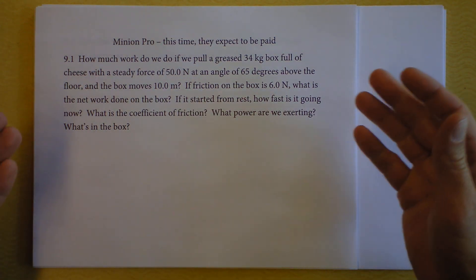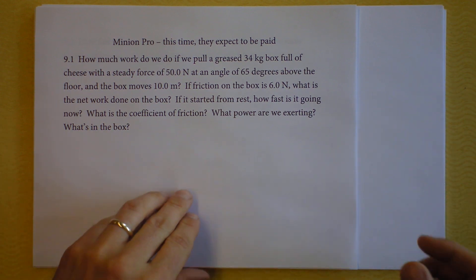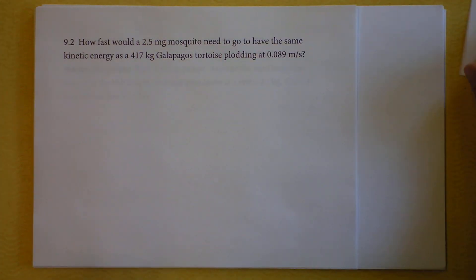In this problem, it's sort of like having a three-year-old at your house, because it starts out nice, and then you just get more and more questions. How much work do we do if we pull a greased 34-kilogram box full of cheese with a steady force of 50 Newtons at an angle of 65 degrees above the floor, and the box moves 10 meters? That's not so bad. Then they want to know about friction on the box. Then they want to know if it started from rest, how fast it's going. Then they want to know the coefficient of friction. Then they want to know the power that we're exerting. And they want to know what's in the box.